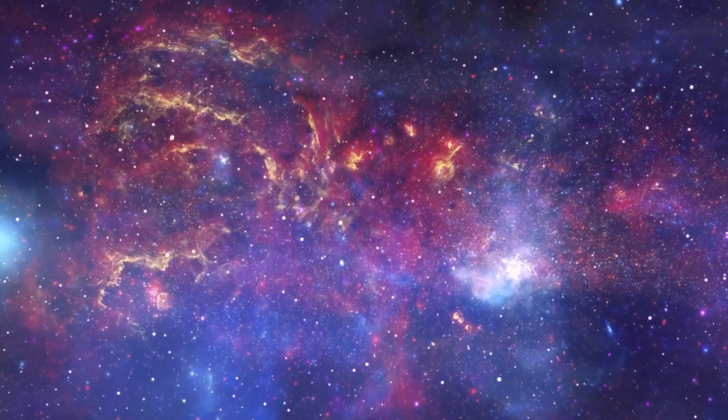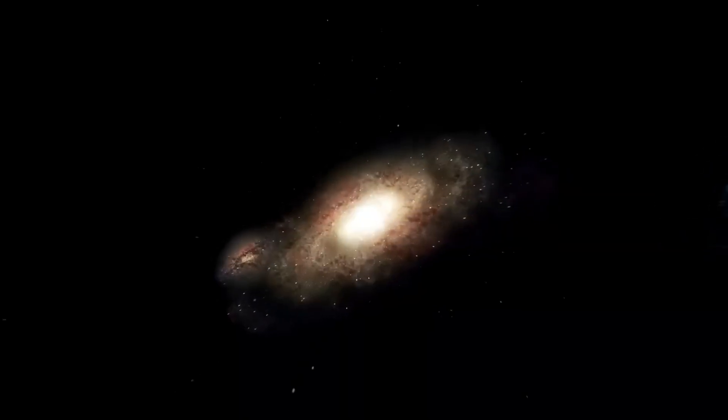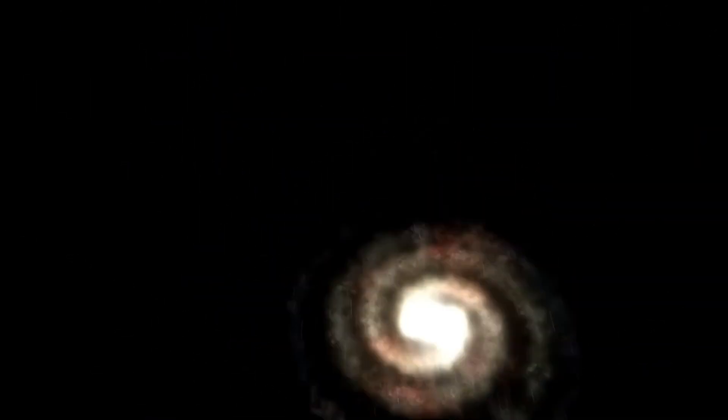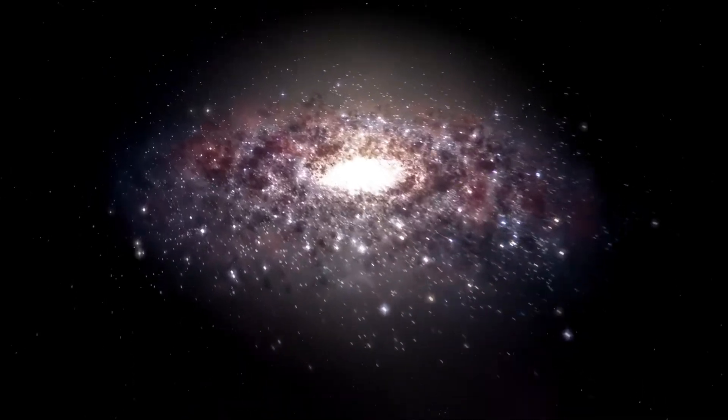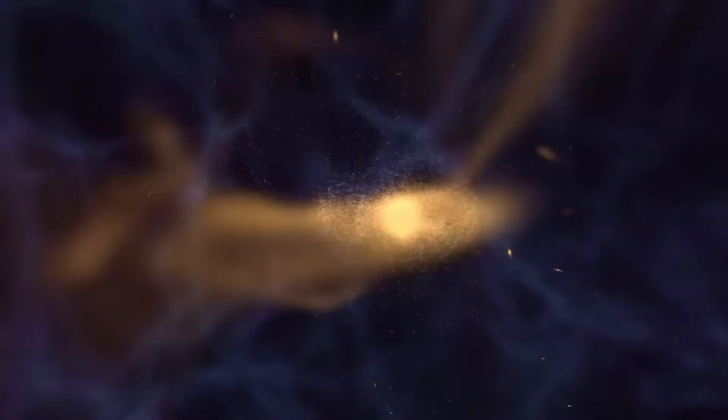how could these ancient galaxies have reached the same level of complexity so early? When scientists describe a galaxy's beauty, they refer to its high degree of order, spiral arms, disks, and well-defined shapes.